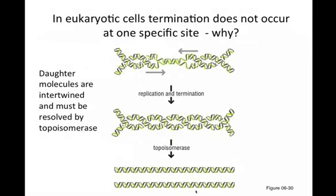Topoisomerase in bacteria is very much involved with this decatenation. In eukaryotic cells, remember you've got all these origins firing in clusters, bidirectional replication moving forward, and that's going to result in intertwined daughter molecules of DNA. Those will also be resolved by topoisomerase — the type that cuts both strands and does strand passage. In eukaryotic cells, termination does not occur at one site. You've got multiple origins, so every time a bubble broadens and forks run into each other you get termination — it's terminating at multiple sites.